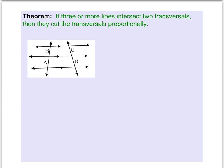Another theorem we have states if three or more lines intersect two transversals then those lines are cut proportionally. In other words, B over A is equal to C over D. And there are some alternative ways we can write that as well. Here is another example.